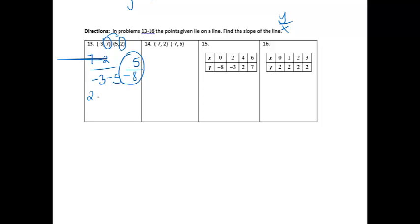If you went the other way, I would have had 2 minus 7 over 5 minus negative 3. That would have given me also negative 5 over 8.